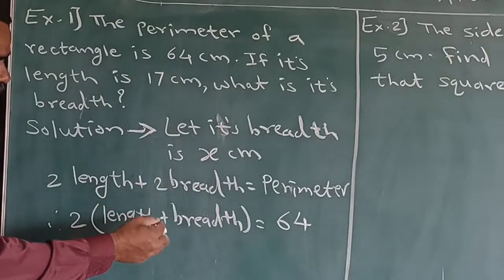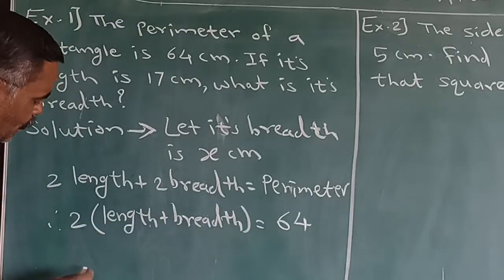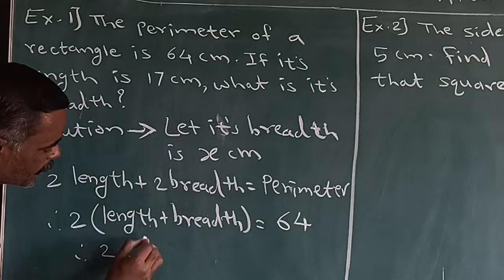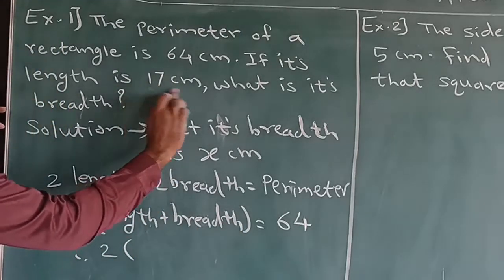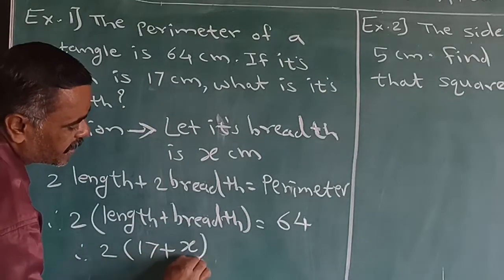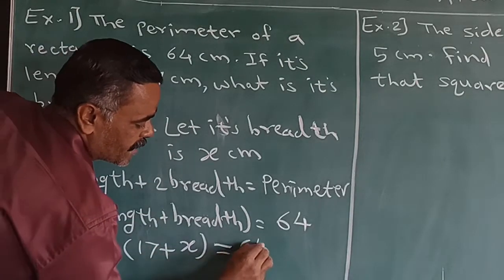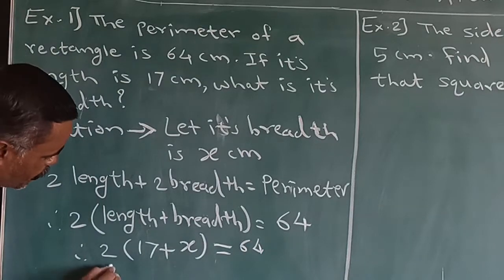2 into length plus 2 into breadth is equal to 64. And therefore, 2 into, here length is equal to 17 cm plus breadth is x is equal to 64.